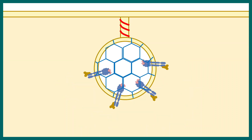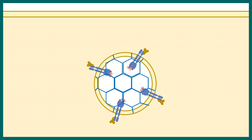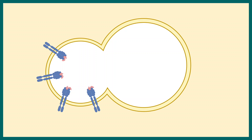After a while, these clathrin-coated vesicles hang from the membrane, and a protein known as dynamin pinches off the vesicle from the membrane. The vesicle is now internalized. Once internalized, this vesicle can fuse with the endosome, and inside the endosome the pH is low.